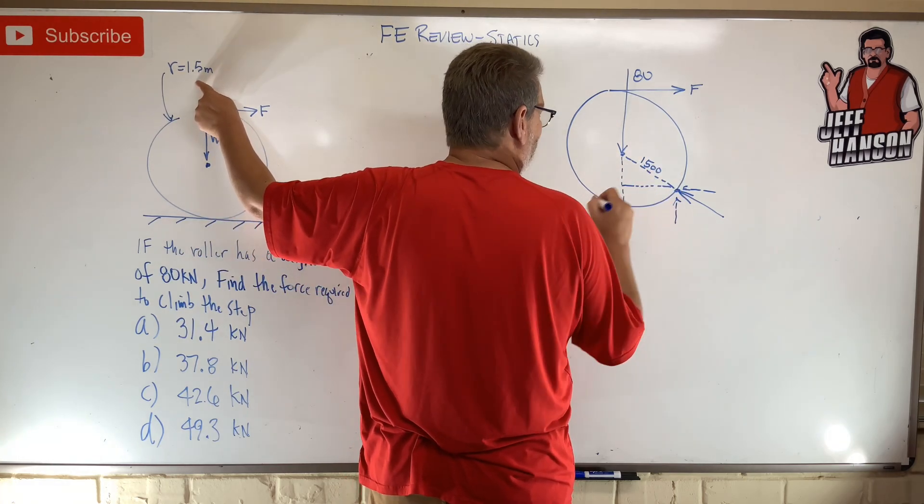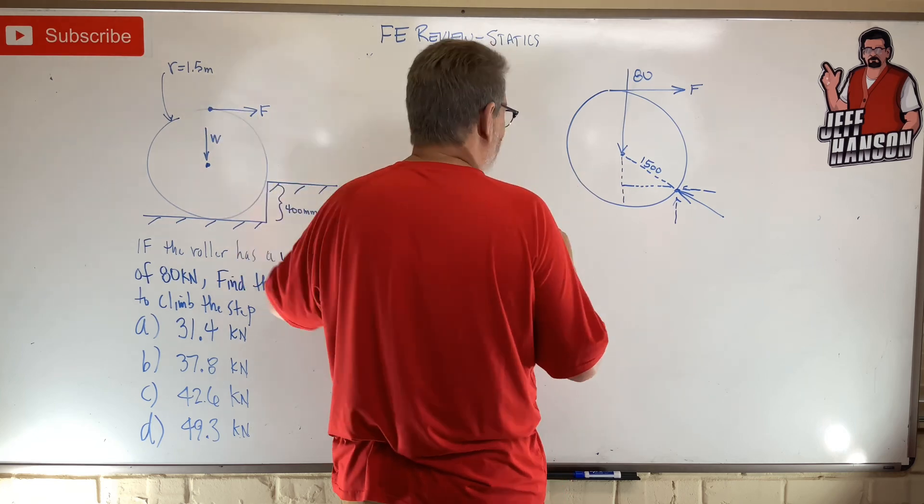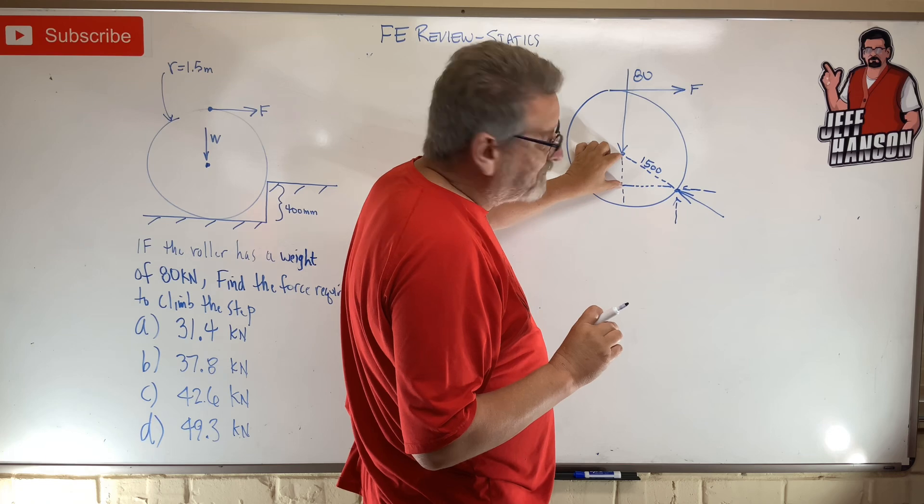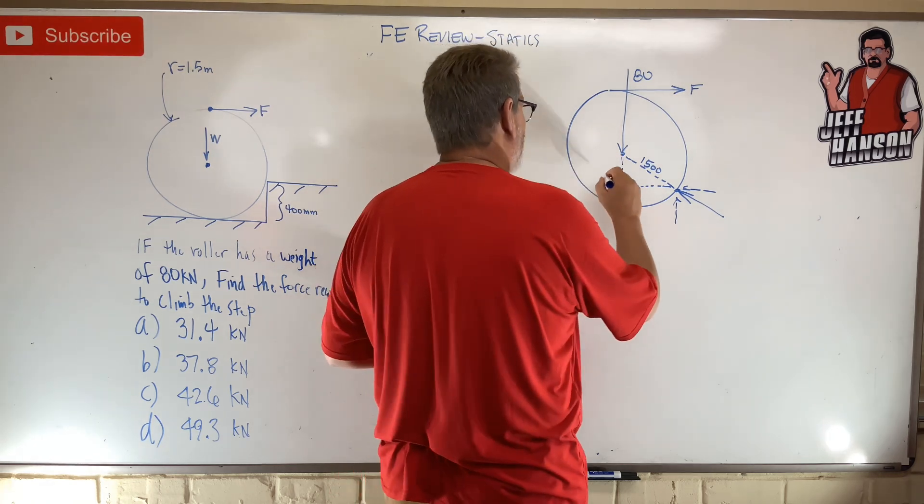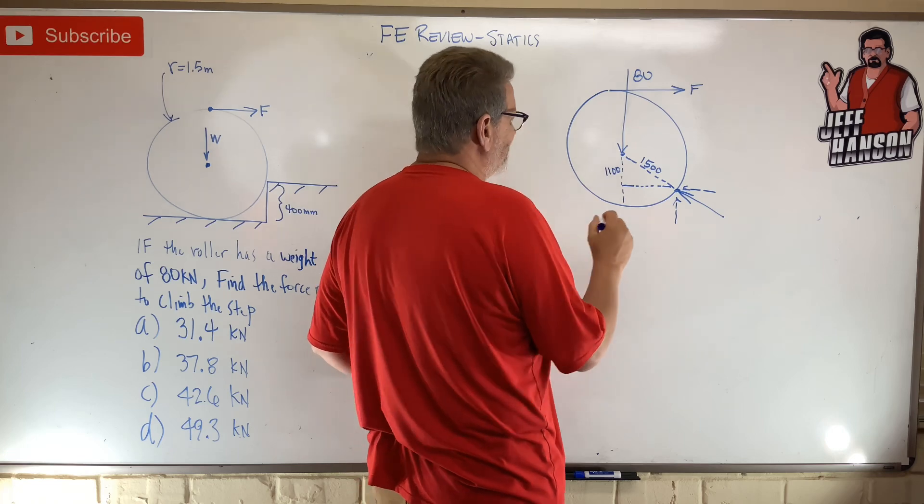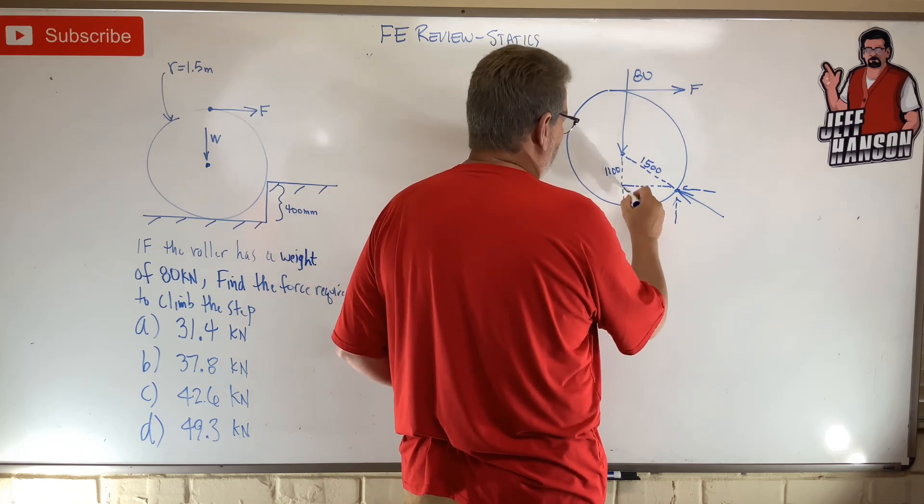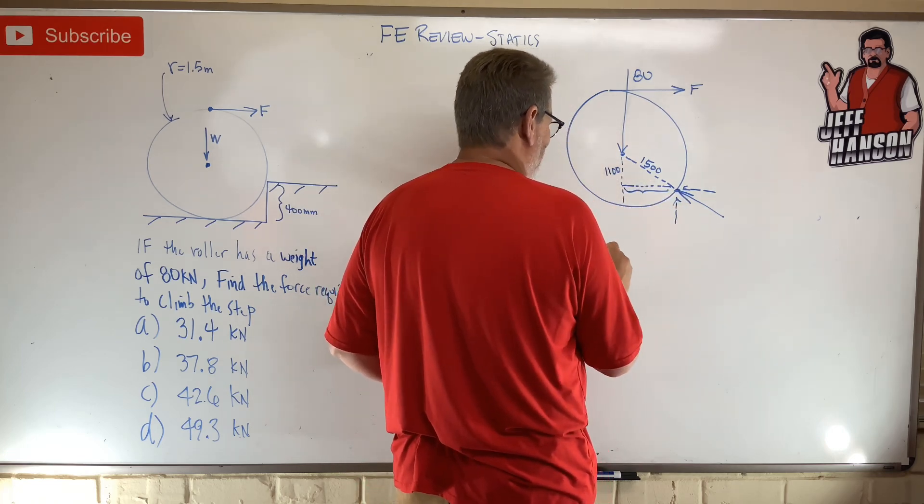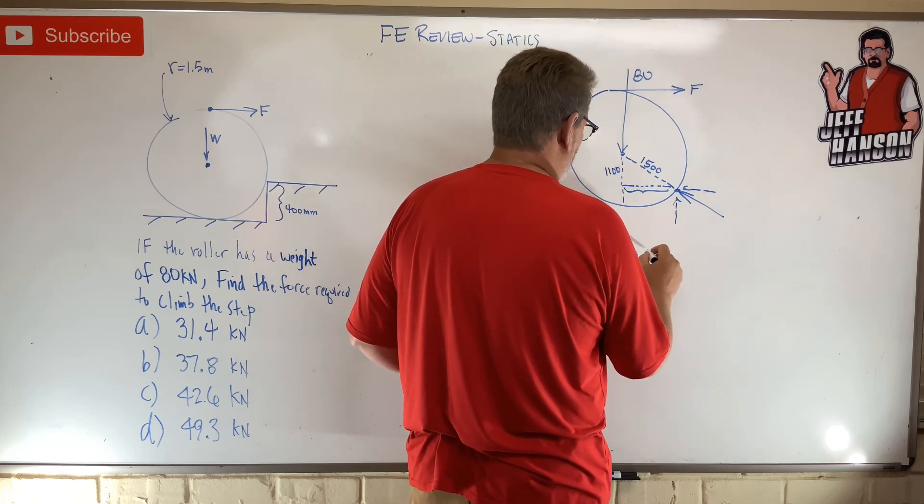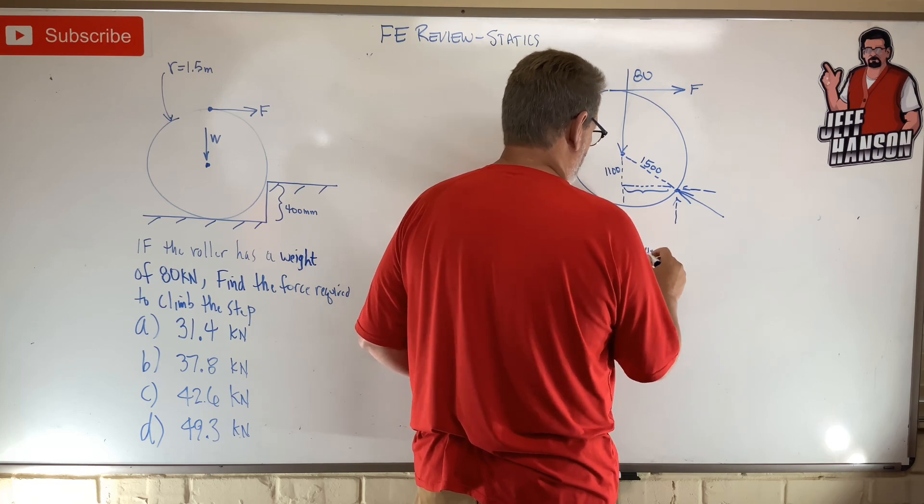I'm gonna put it in millimeters though, okay? That's 1500. The step is 400, so that's 400. So this must be 1100. Okay, and let's see, if that's 1100, then this bottom down here must be like 1500 squared is equal to 1100